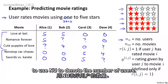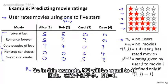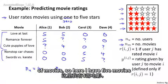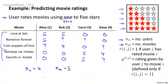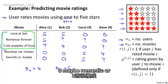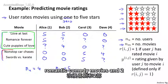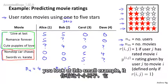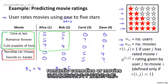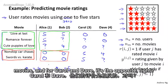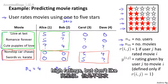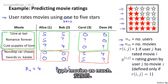Alice really likes Love at Last and rates it five stars, really likes Romance Forever and rates that five stars. She did not watch Cute Puppies of Love so we don't have a rating for that. Alice really did not like Non-Stop Car Chasers or Swords of Karate. Bob rates a different set of movies. Looking at this small example, it looks like Alice and Bob are giving high ratings to the romantic comedies or movies about love, and giving very low ratings to the action movies. For Carol and Dave, it's the opposite — they really like the action movies and give them high ratings, but don't like the romance and love type movies as much.